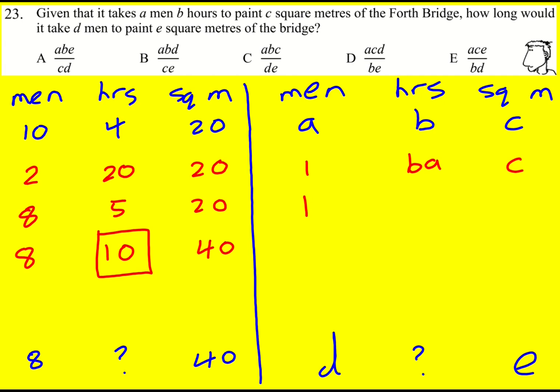And then that means how long it would take, how much square meterage would one man do in one hour? Well here I would, if I'm dividing the amount of time by BA, I would divide the square meterage by BA.